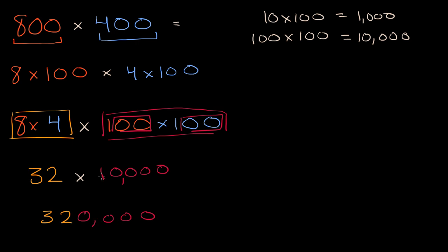This is 32 ten thousands, which is 320,000. Now another way you could have thought about it is 8 times 4 gives us our 32, and then we have two zeros there, two zeros there for a total of four zeros, and we have our four zeros right over there. Now I don't want you to just memorize that. It works because this is eight hundreds times four hundreds. 8 times 4 gives us the 32, and then the hundred times the hundreds, that's where these four zeros come from.